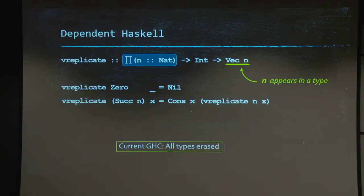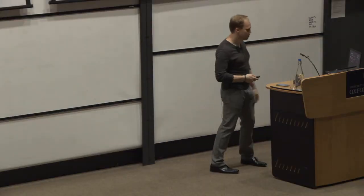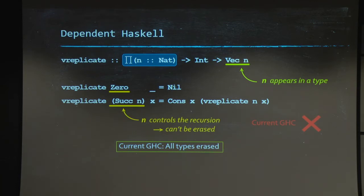That is, we have to get rid of it during compilation. But the problem is that n is actually very important at runtime. We're making a decision based on it. We pattern match on it, and either we stop the recursion here, or we keep going. So we just cannot get rid of it. And that's the reason why in current GHC you cannot type check this code. You may be able to encode it in some other way, but you cannot type check it this way.